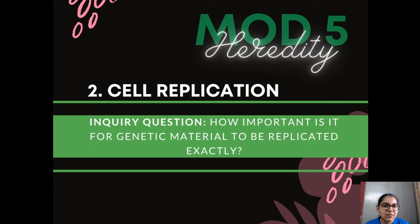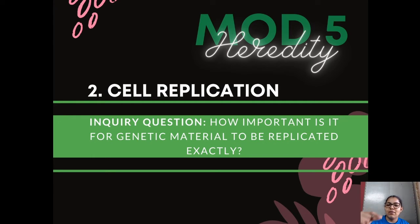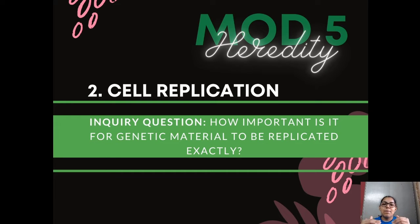It's all about being able to come back and say: I've learned these concepts and this is how it's relevant to the question of how important it is for genetic material to be replicated exactly. All these processes are ensuring that genetic material is replicated exactly. You should be able to answer that in an extended response — a 9 or 10 marker, a solid response.